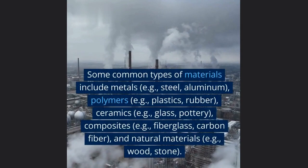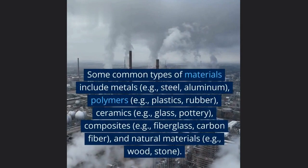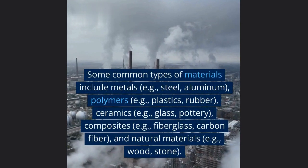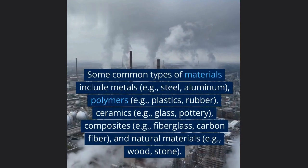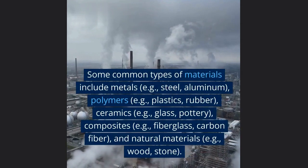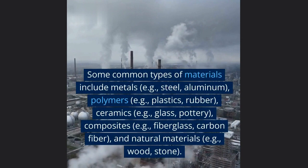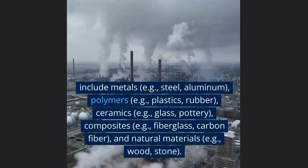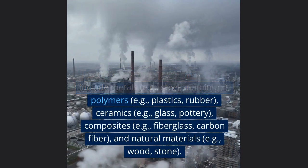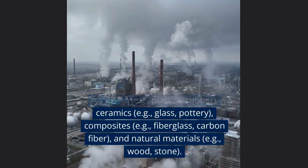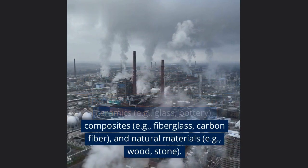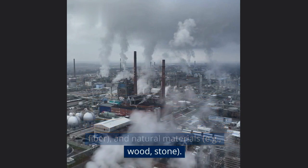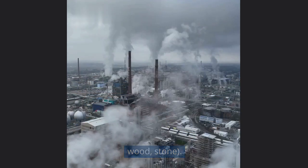Some common types of materials include metals, e.g. steel and aluminum; polymers, e.g. plastics and rubber; ceramics, e.g. glass and pottery; composites, e.g. fiberglass and carbon fiber; and natural materials, e.g. wood and stone.